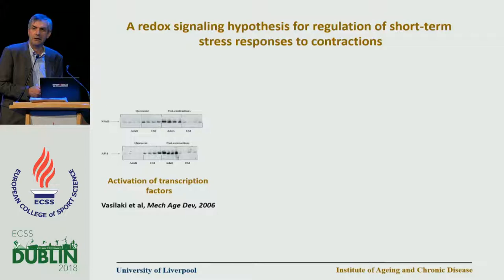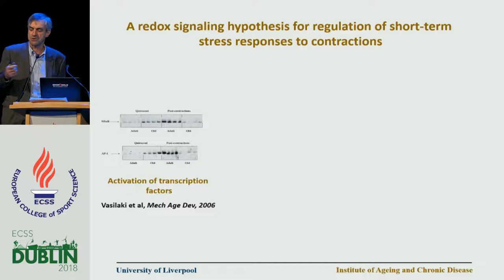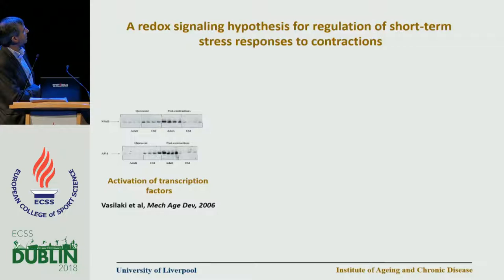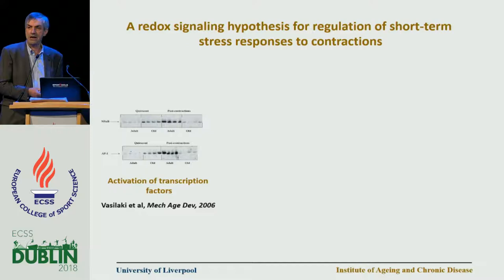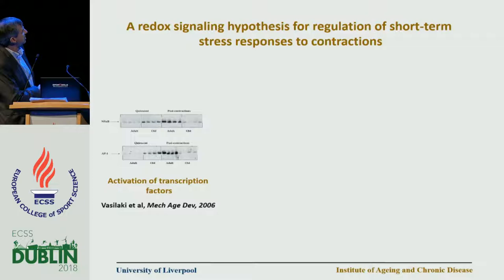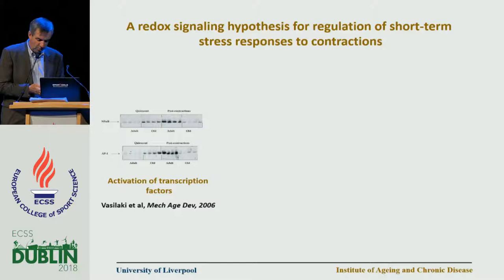So what are the mechanisms? It has been known for quite a long time that there are a number of transcription factors which seem to be responsive in some way to these oxidants. Work from Aphrodite Vasilaki shows activation of NF-κB and AP-1 using a gel shift system. In adult animals we have very little evidence for DNA binding at rest, but following contractions this increases quite dramatically. In aged animals, we found a chronic activation of NF-κB, AP-1, and HSF1, with actually a reduction with contractions.